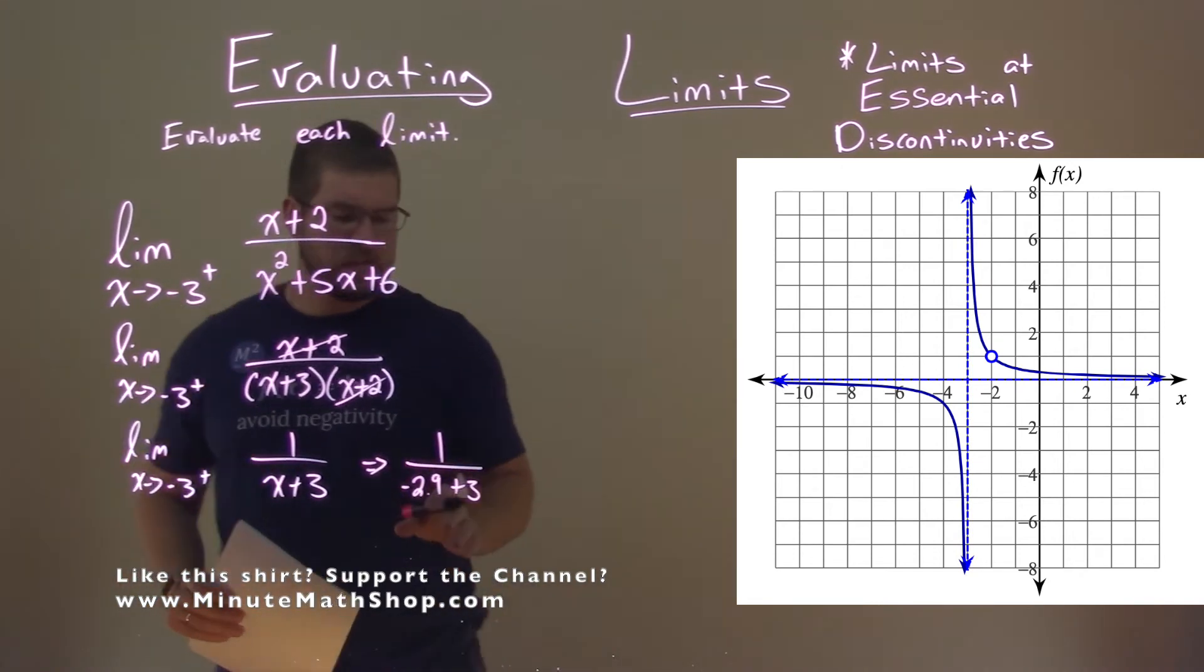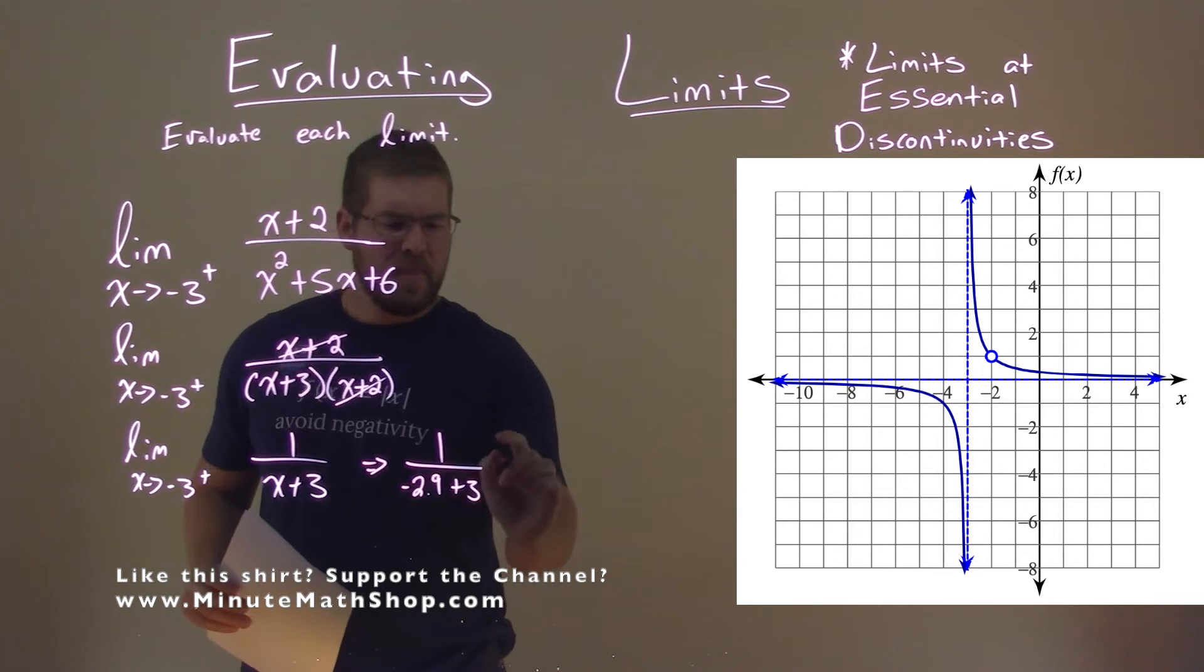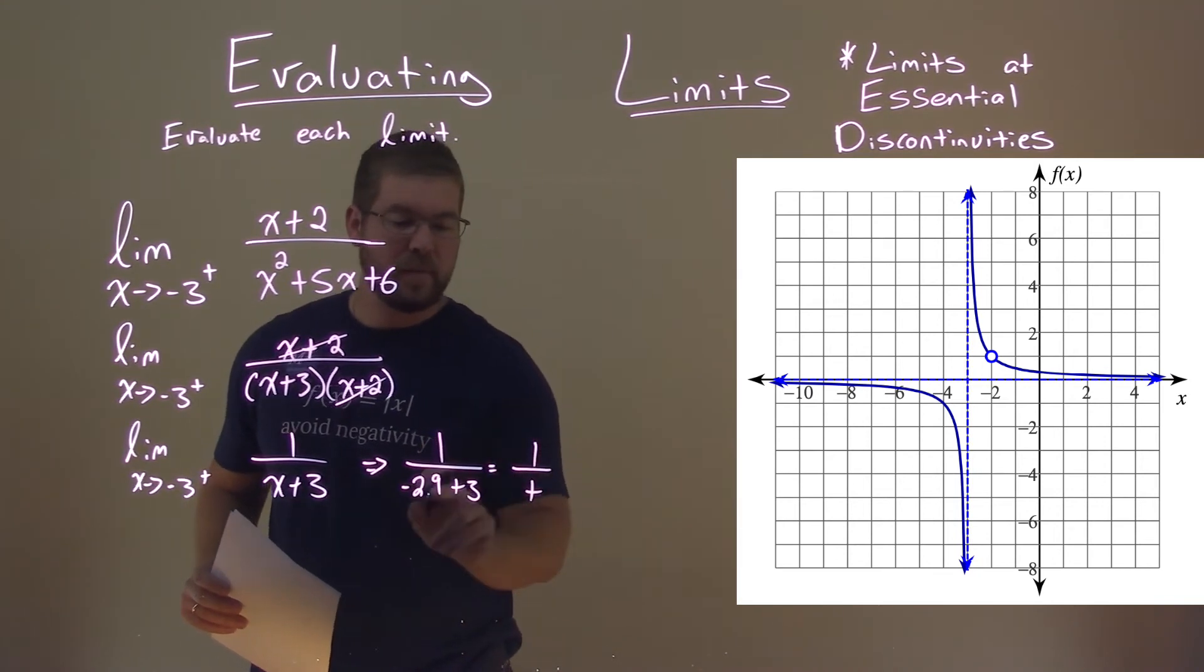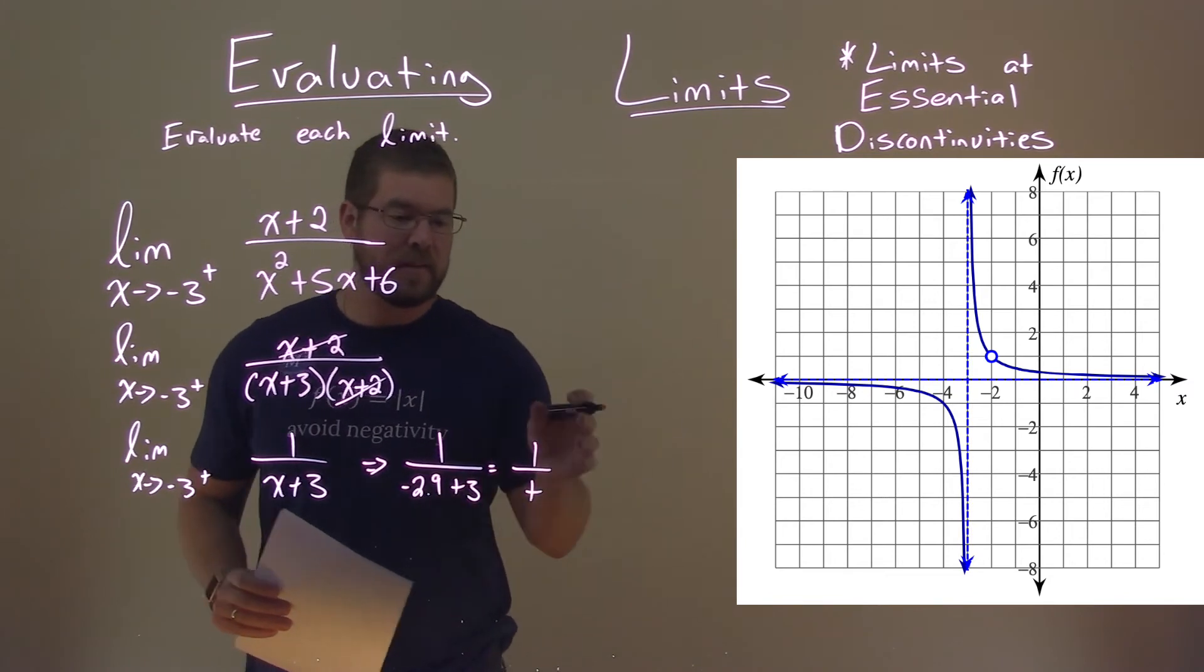All right, when I put that into our x value, this denominator equals a positive number. That's really what I'm looking for. It's going to be positive in the denominator as it gets closer and closer to 0.